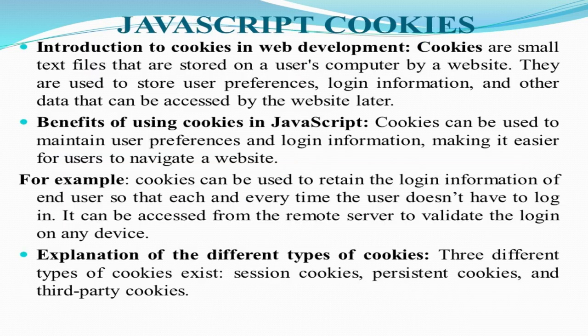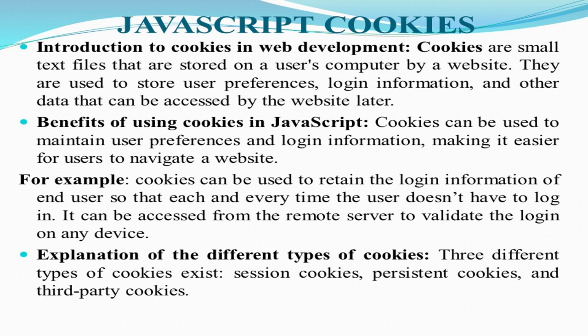Now regarding JavaScript cookies — cookies are small text files stored on a user's computer by any website that the end user visits to obtain information. They are used to store user preferences and login information such as username, password, mobile number, and email ID, along with other data that can be accessed by the website at a later time.